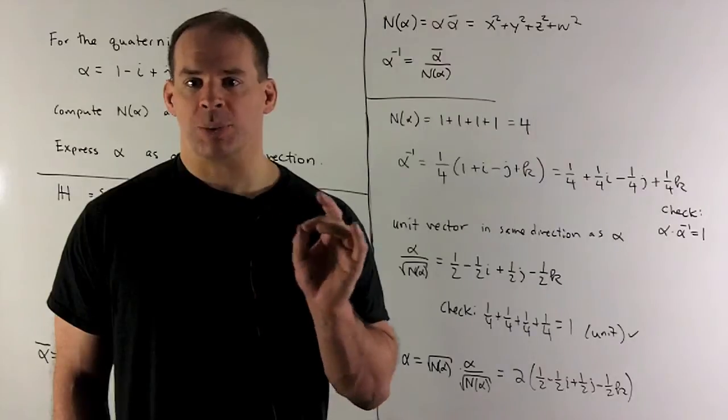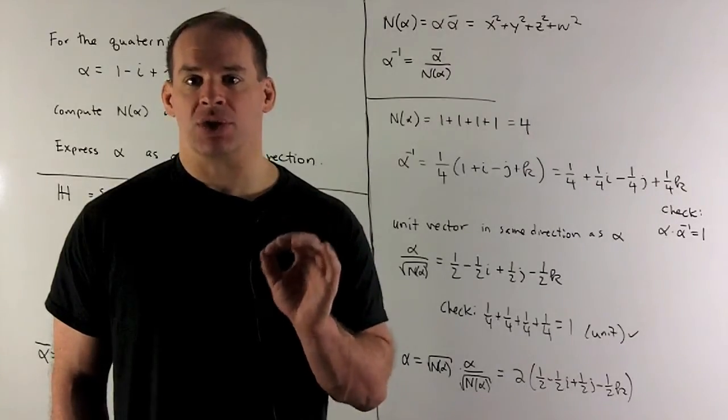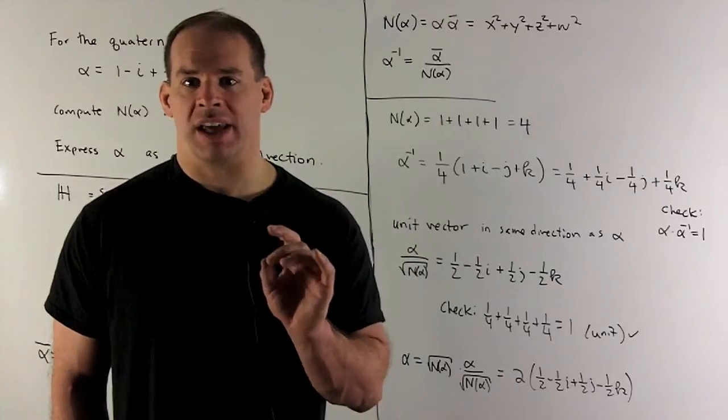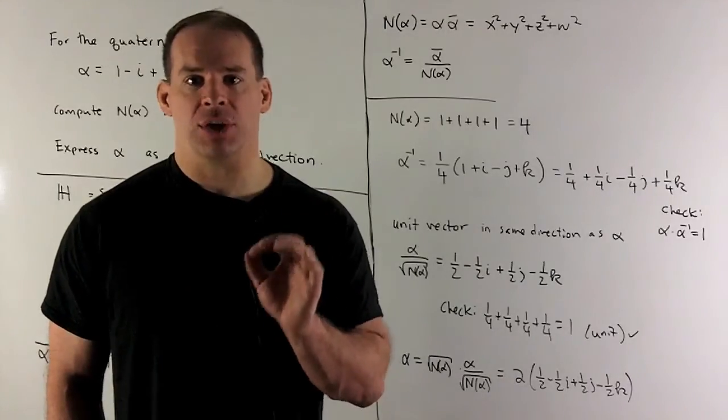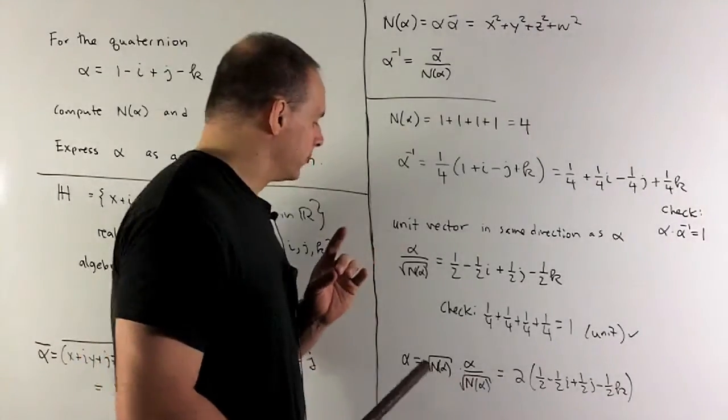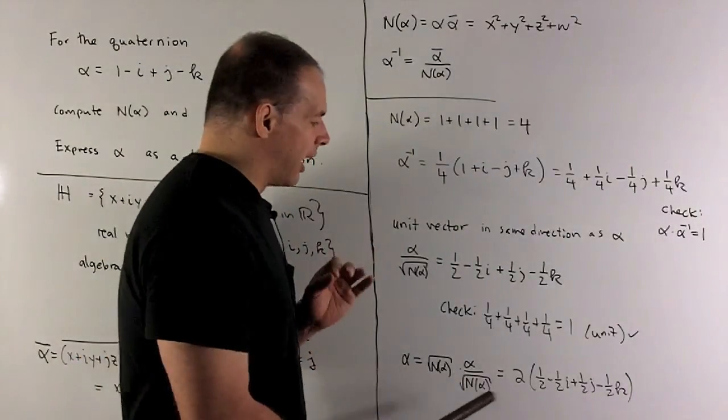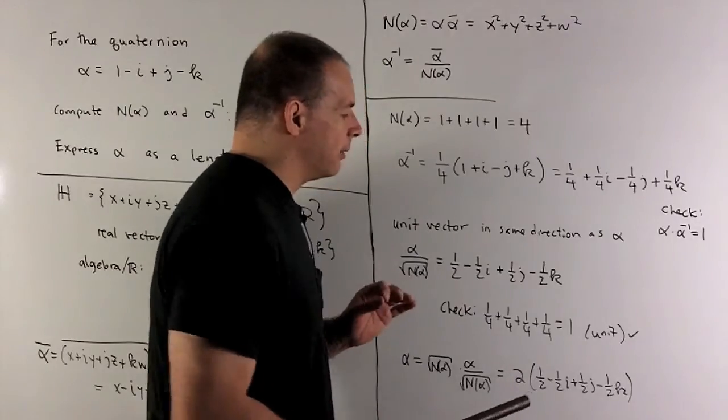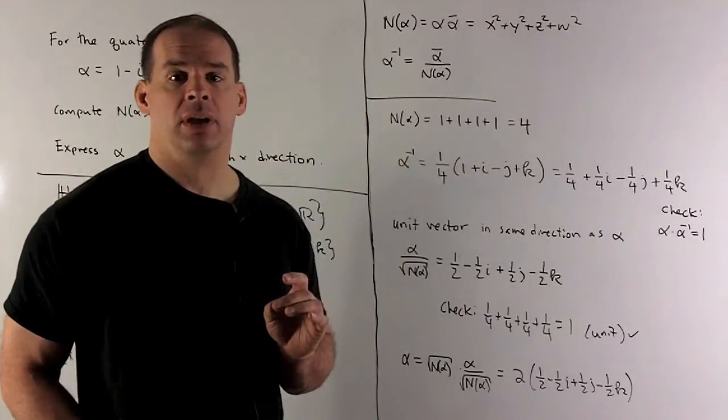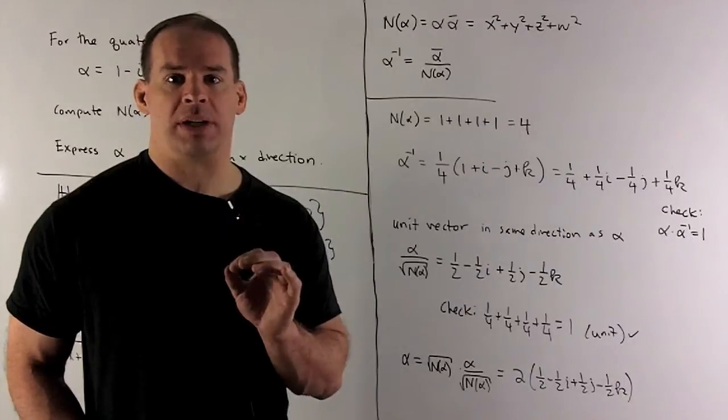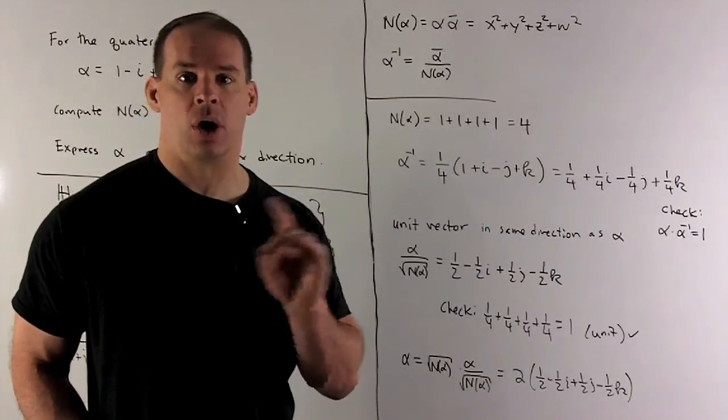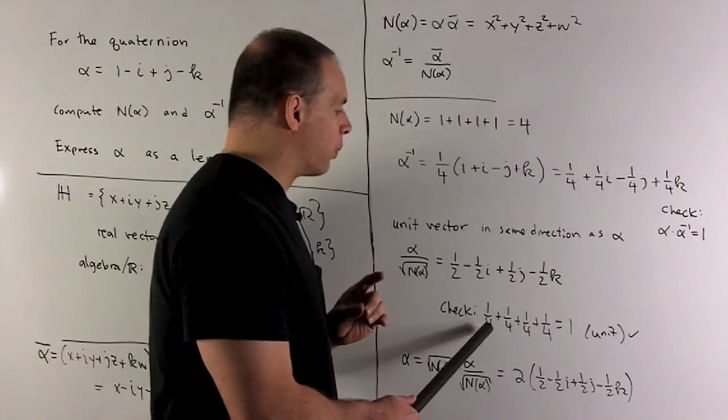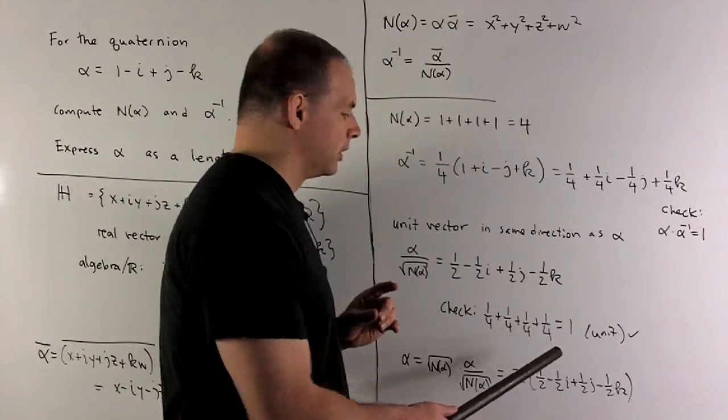So for our special case, we're going to have the length is going to be equal to square root of 4 or 2. And then, if I want the direction, I take alpha divided by 2. So that's going to give me, our decomposition is, the length is 2. And then my unit vector is a half minus a half i plus a half j minus a half k. We can check if that's a unit vector by taking the sum of the squares of the coefficients. So that'll give us 4 times 1 fourth. Gives me a 1. So that checks.